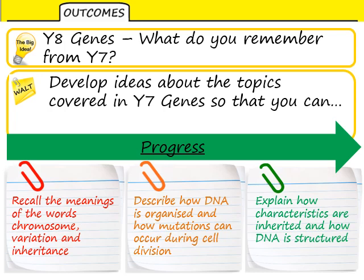You need to know what a mutation is and what it can lead to. And I'd like you to be able to explain how characteristics are inherited — characteristics being things like hair colour or eye colour in humans — and also how our DNA is structured, what the structure of a piece of DNA actually is.